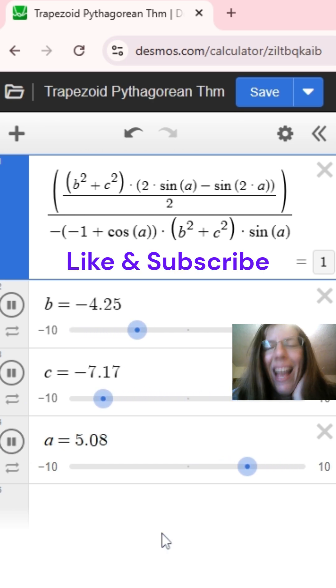So yes, the trapezoids do show that the sum of the areas of the two smaller trapezoids equals the area of the largest trapezoid. Thank you.